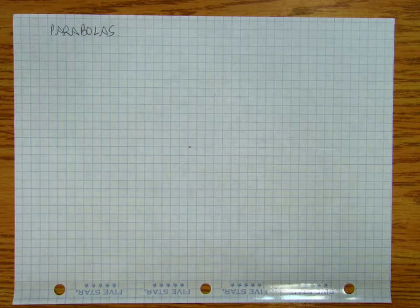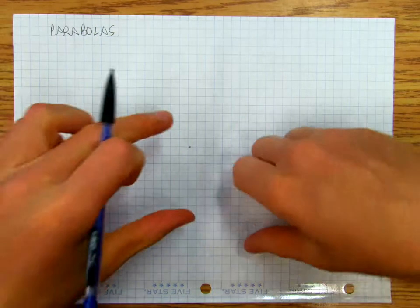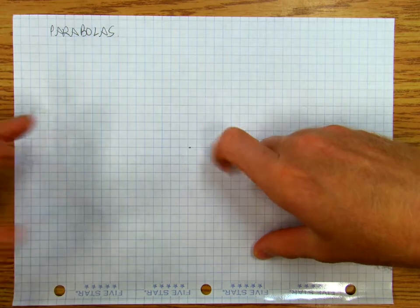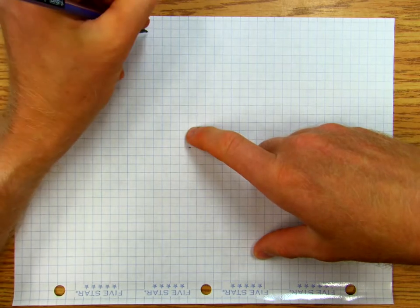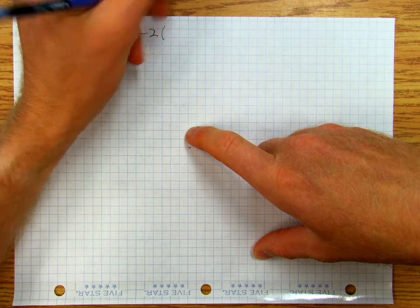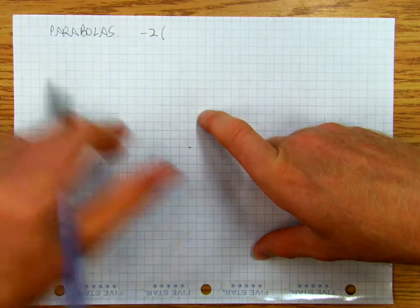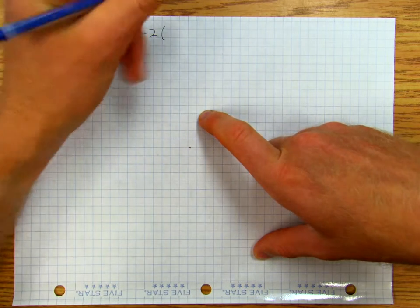Okay, so we're continuing to look at parabolas, and in this video we're going to look at a parabola that's going to open up to the left. And so what I'm going to do is say here's my equation, and it doesn't have a vertex of 0, 0.